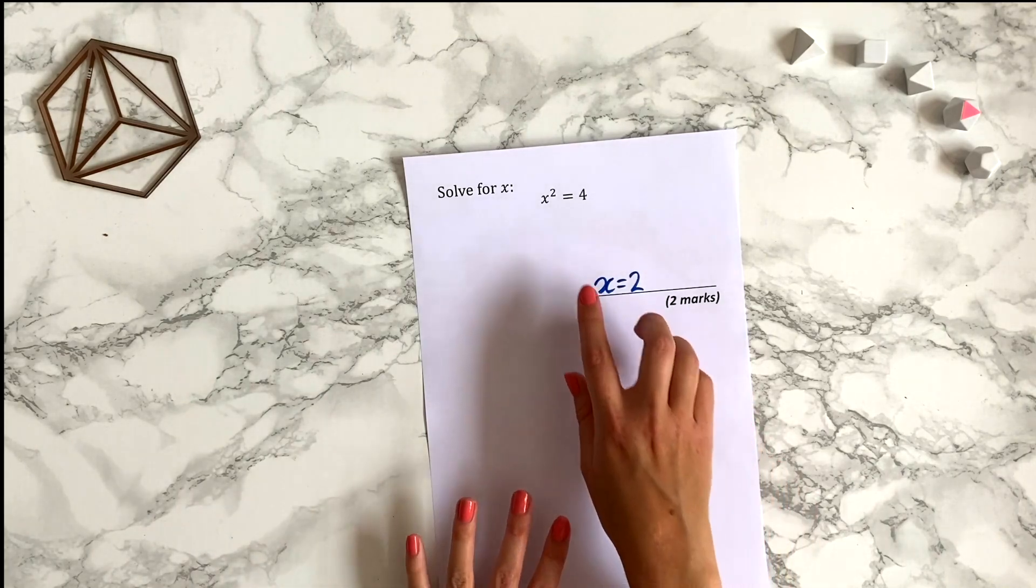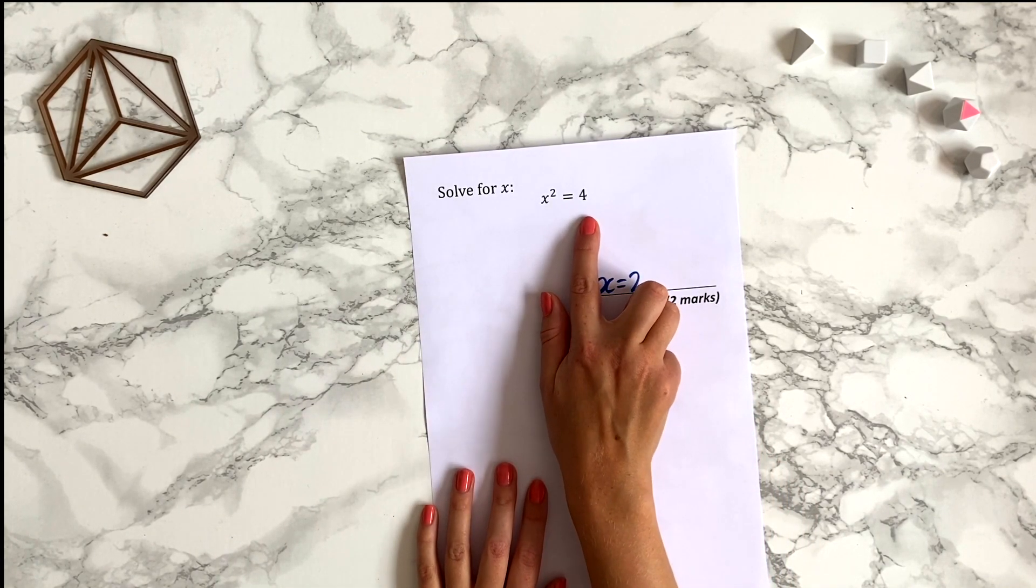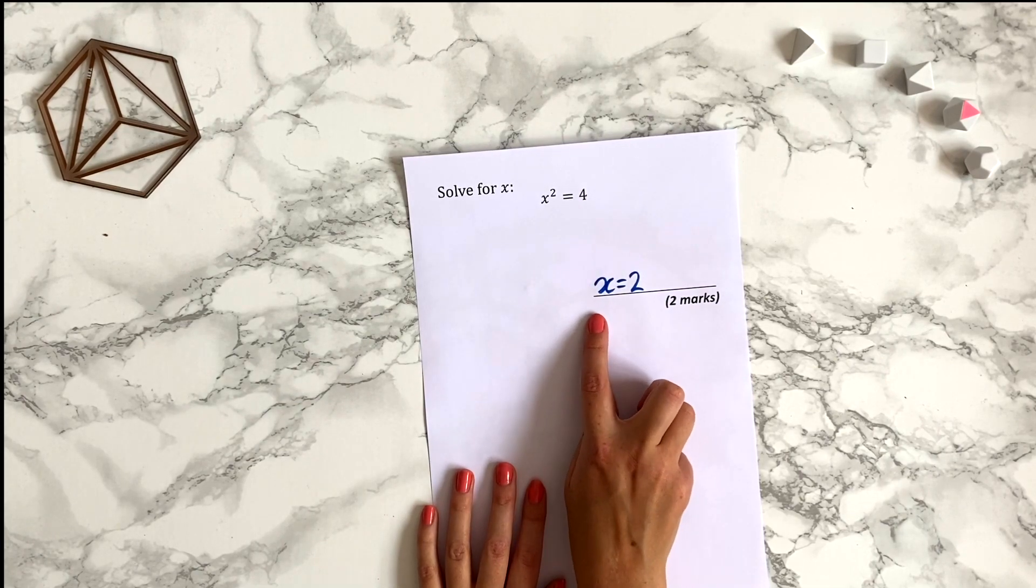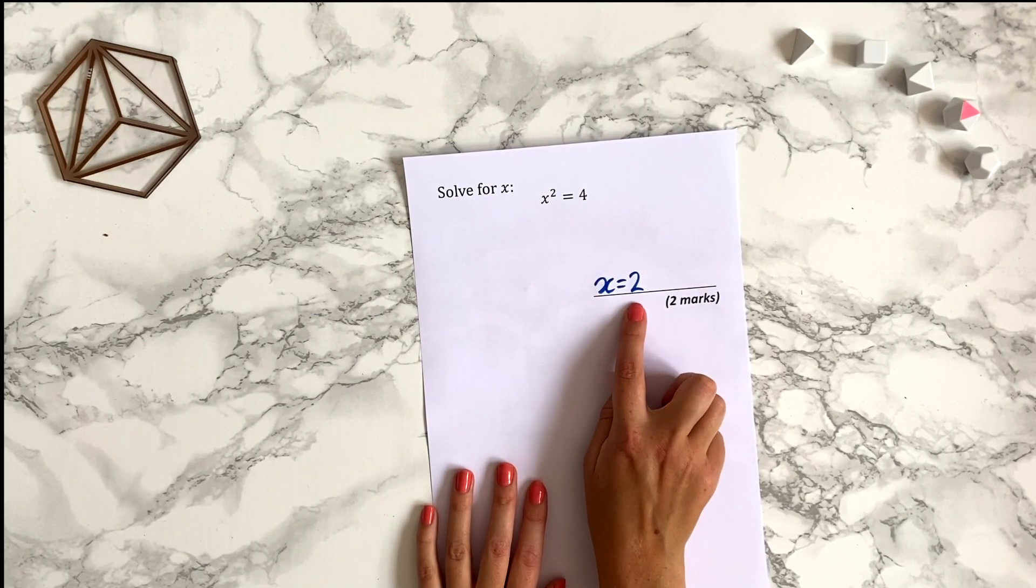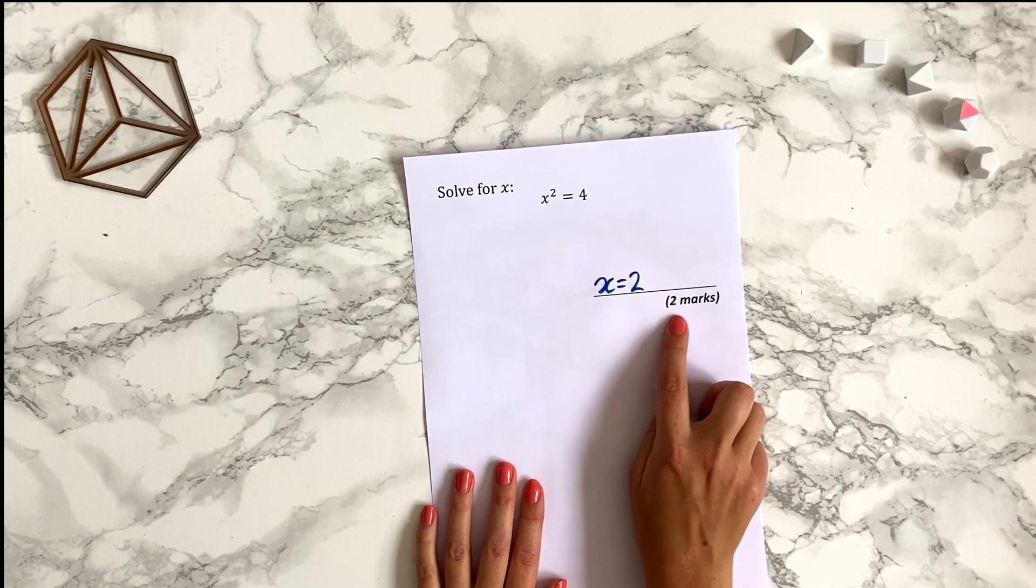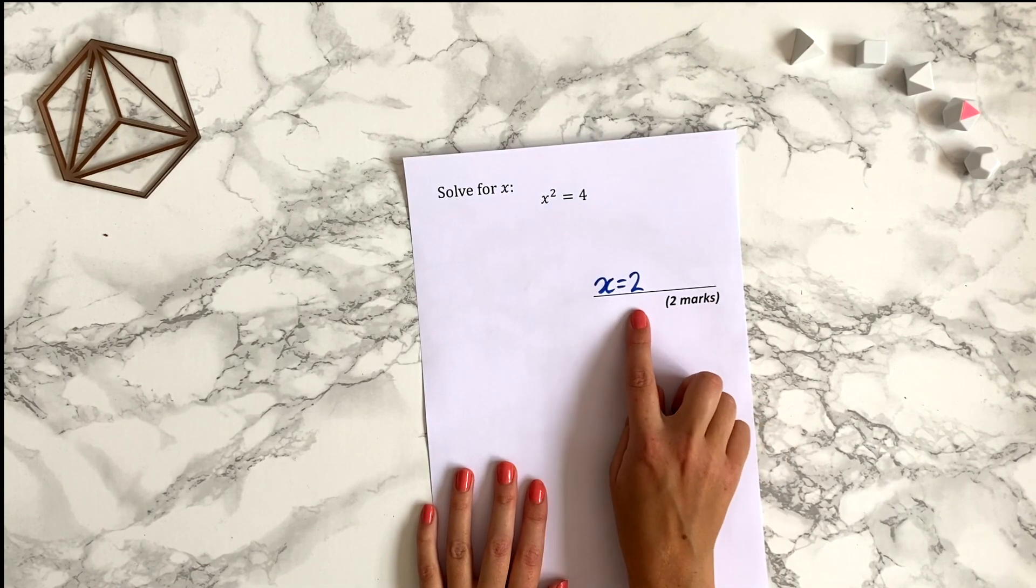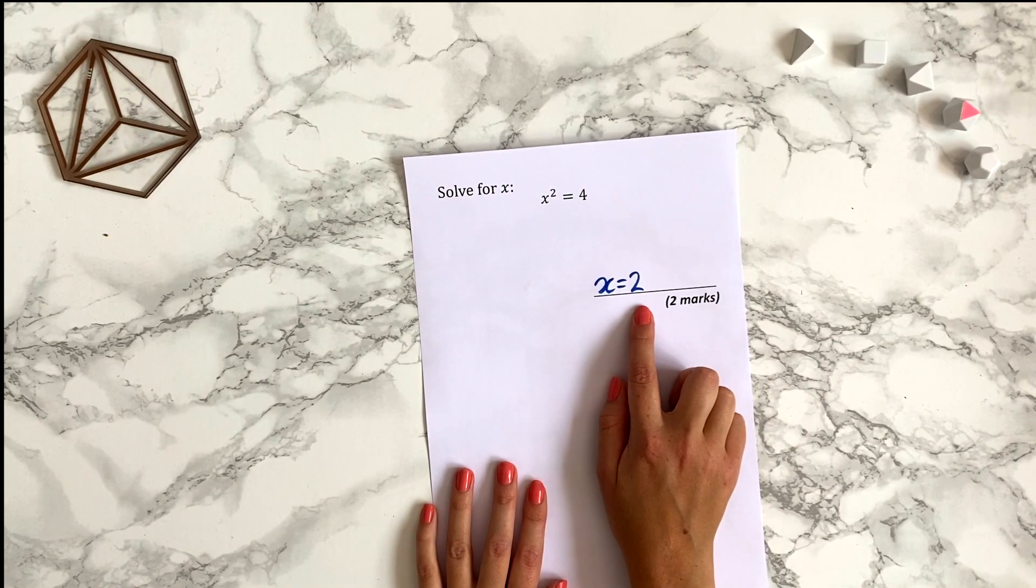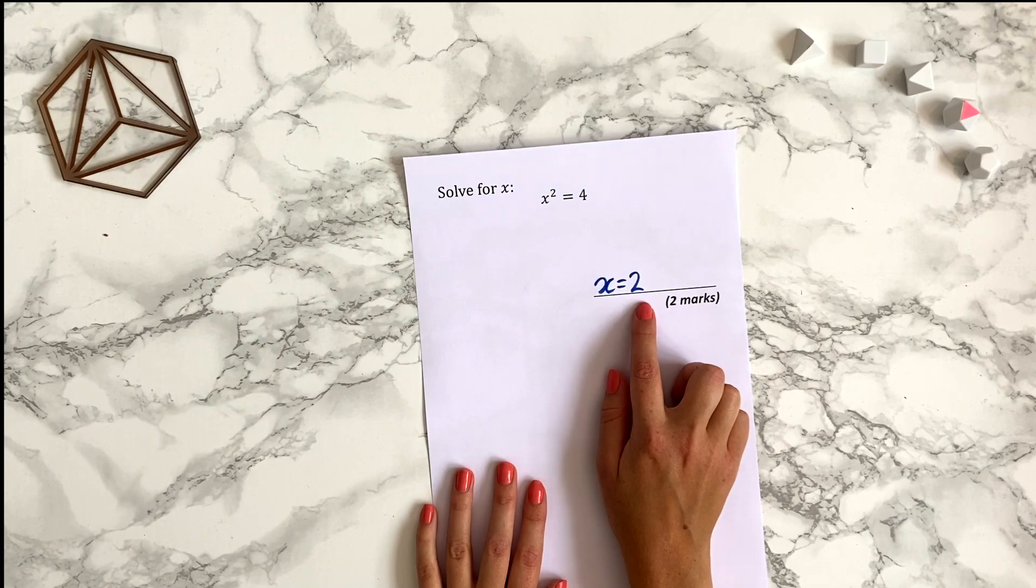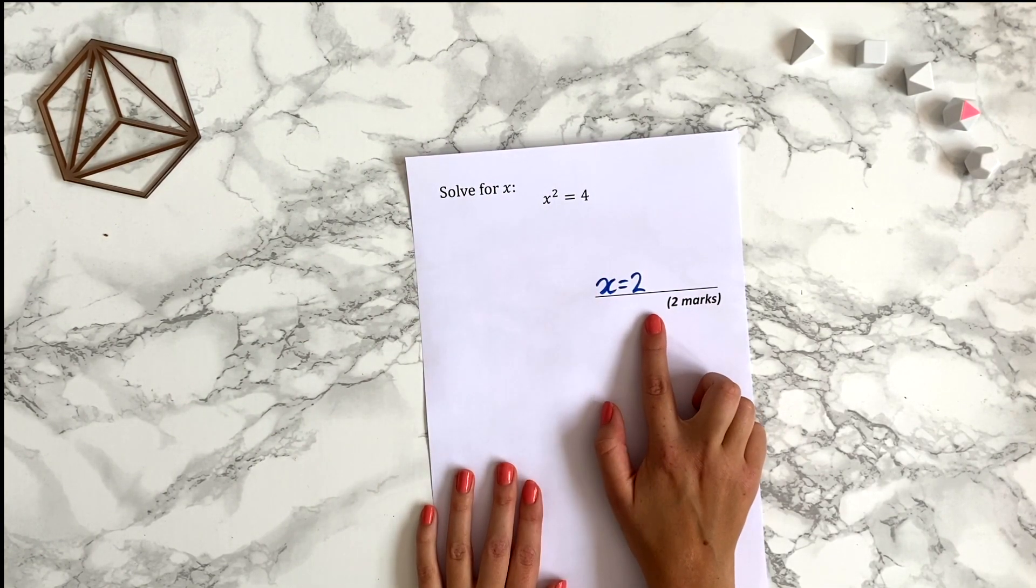The number of marks a question is worth can tell you a lot. Say you have this GCSE question which says solve for x, x squared equals 4. Now I've written my answer down for this, I've written x equals 2 because 2 squared is 4. However I now notice that the question is worth 2 marks and I don't really feel like I've done enough for this to be worth 2 marks. I sort of feel this is 1 mark's worth of work because I've only written one answer down and I didn't really need to do any workings.